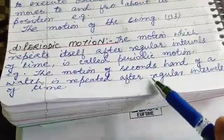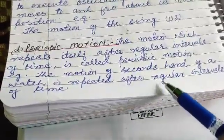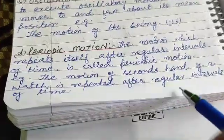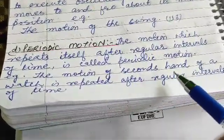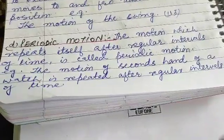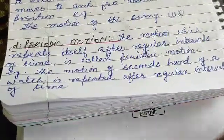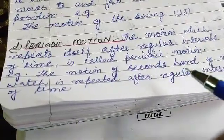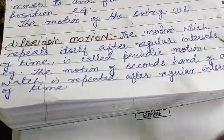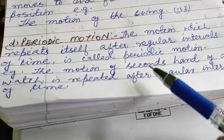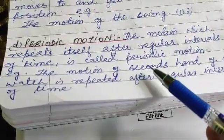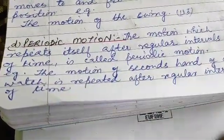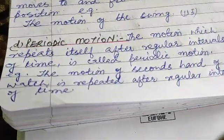The seconds hand repeats its motion after every 60 seconds — that regular interval makes it periodic motion. That is why the motion of the seconds hand of a watch is an example of periodic motion.